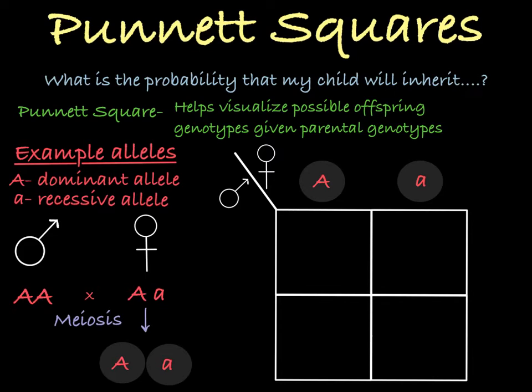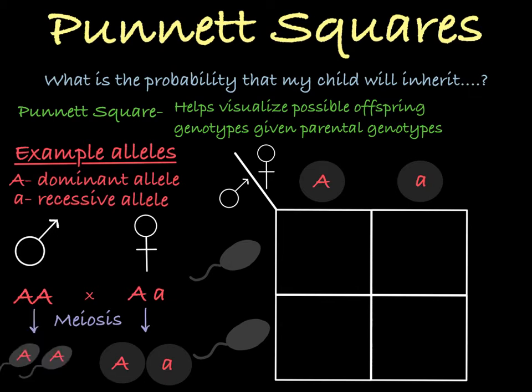At the head of each row, you'll put each possible allele a father could give a child in his sperm. We see that the father could give either this allele or this allele to his sperm. Now to see what all their possible egg-sperm combinations could be, we just fill in each box with the allele that's at the head of its column and row, like this.